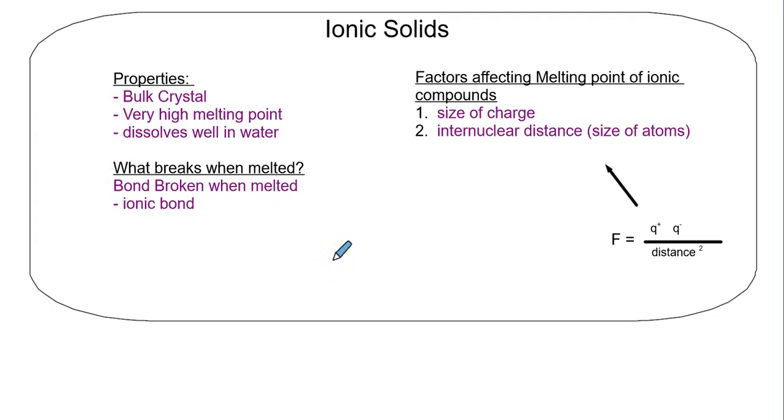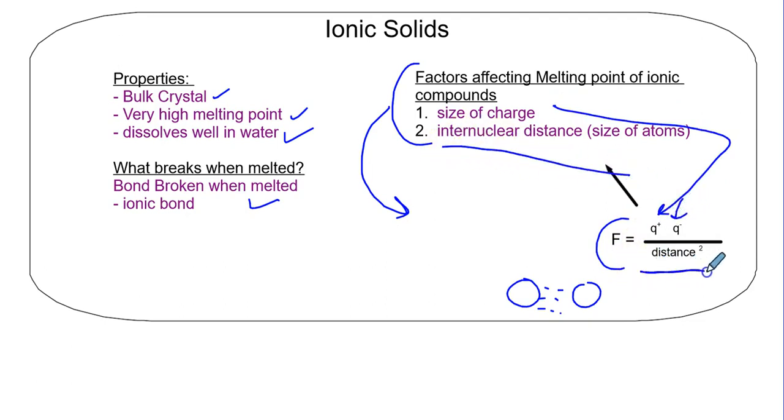Properties of ionic solids: they're a bulk crystal with high melting points. They have unique properties of dissolving in water. What breaks when melted? An ionic bond breaks. One of the key things we do with ionic compounds is determine the factors affecting melting points. We use Coulomb's law to govern how those melting points work. Size of charges is really important, first thing we look at. Second, we look at internuclear distance. As internuclear distance goes up, the forces of attraction go down.